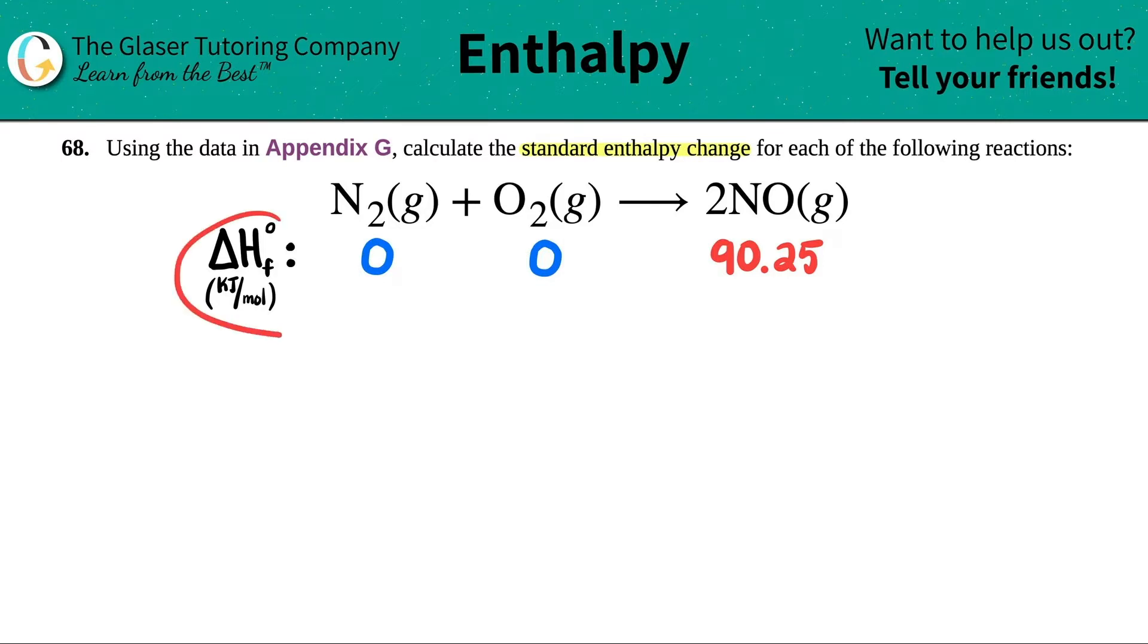What I did for you guys is I already went to the Appendix G and I found out the numbers, the delta H values, which is enthalpy, for each component.